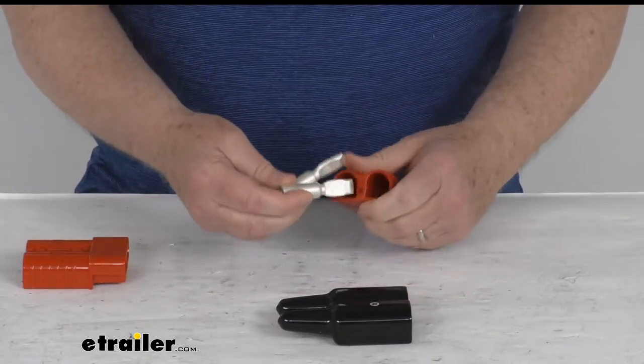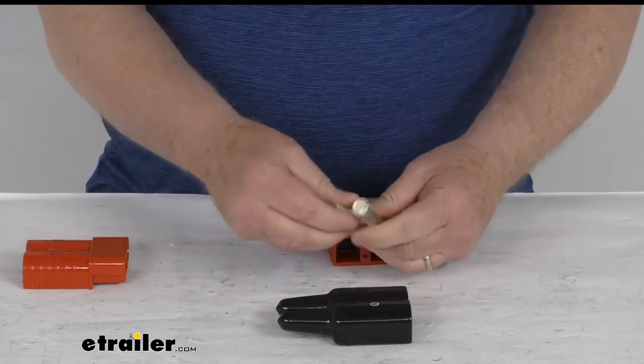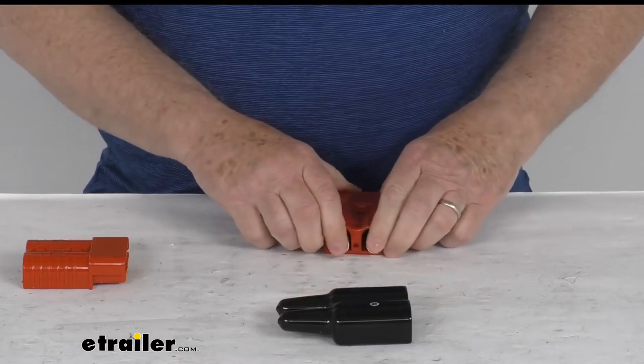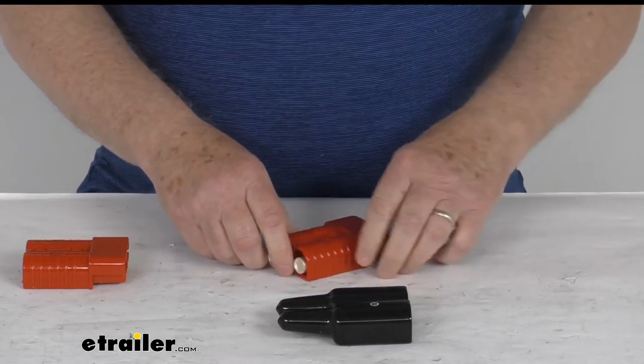So basically when you wire these quick connectors up, you put your wires in here, slide both of these terminals in here right into place, and then you have your quick connector to work.